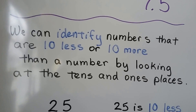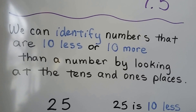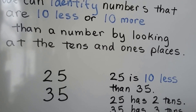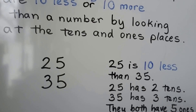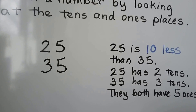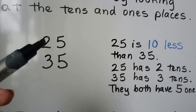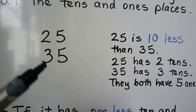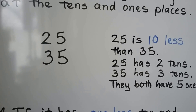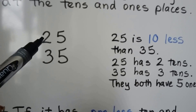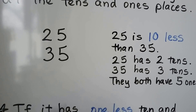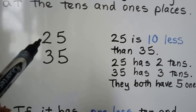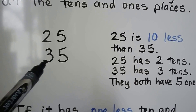That means we can find numbers that are 10 less or 10 more than a number by looking at the tens and ones places. We have a 2 in the tens place and a 5 in the ones place. We have a 3 in the tens place and a 5 in the ones place. 25 is 10 less than 35. 25 has 2 tens, 35 has 3 tens.